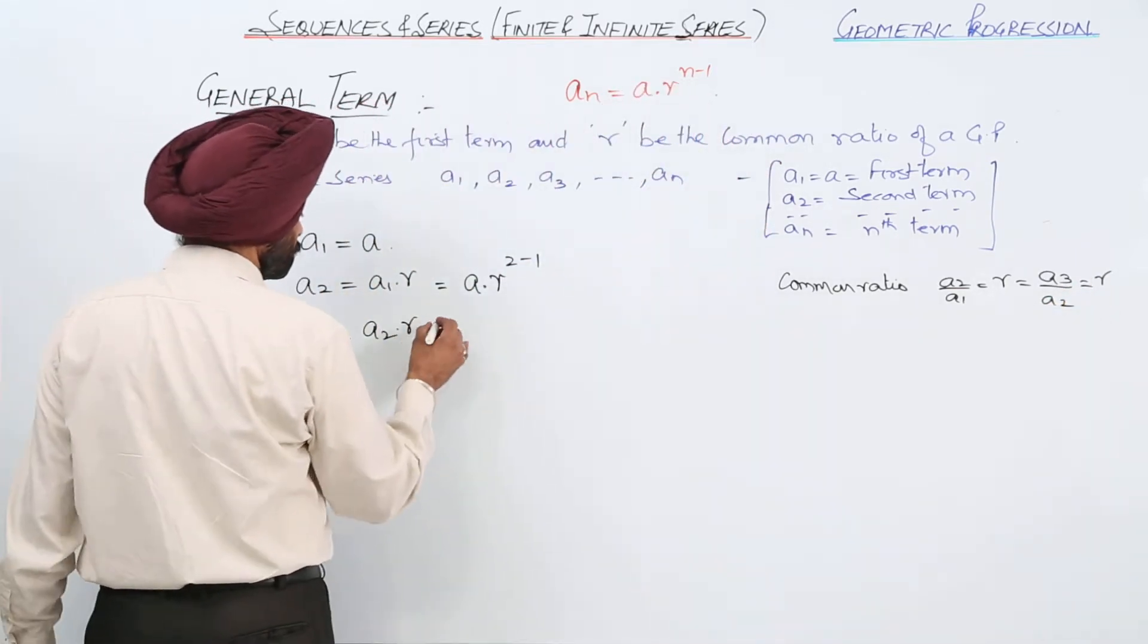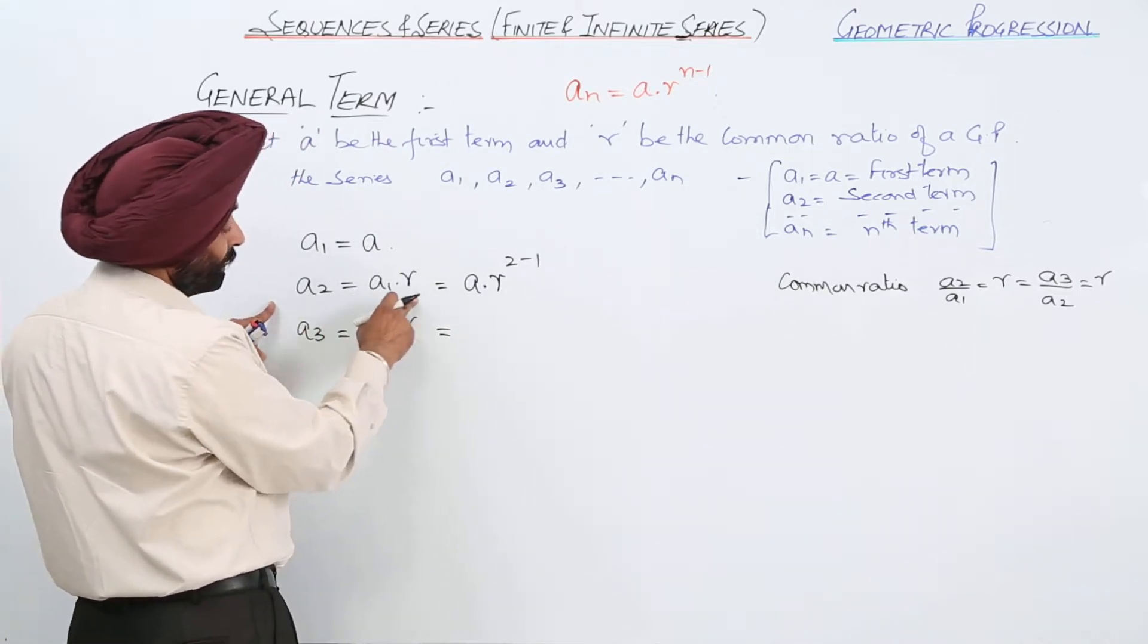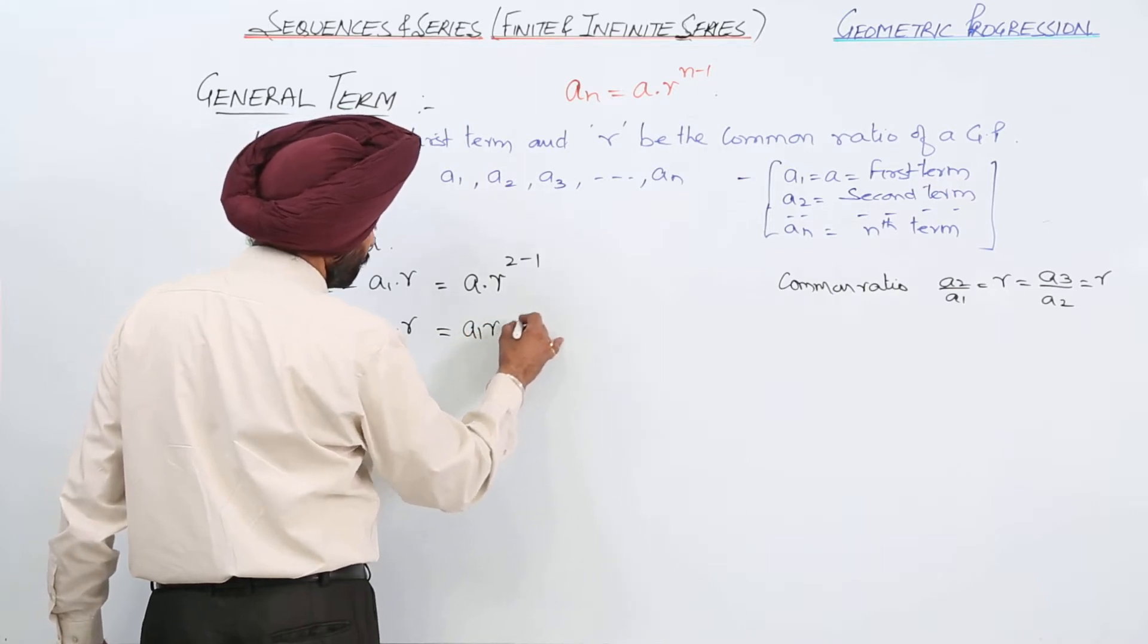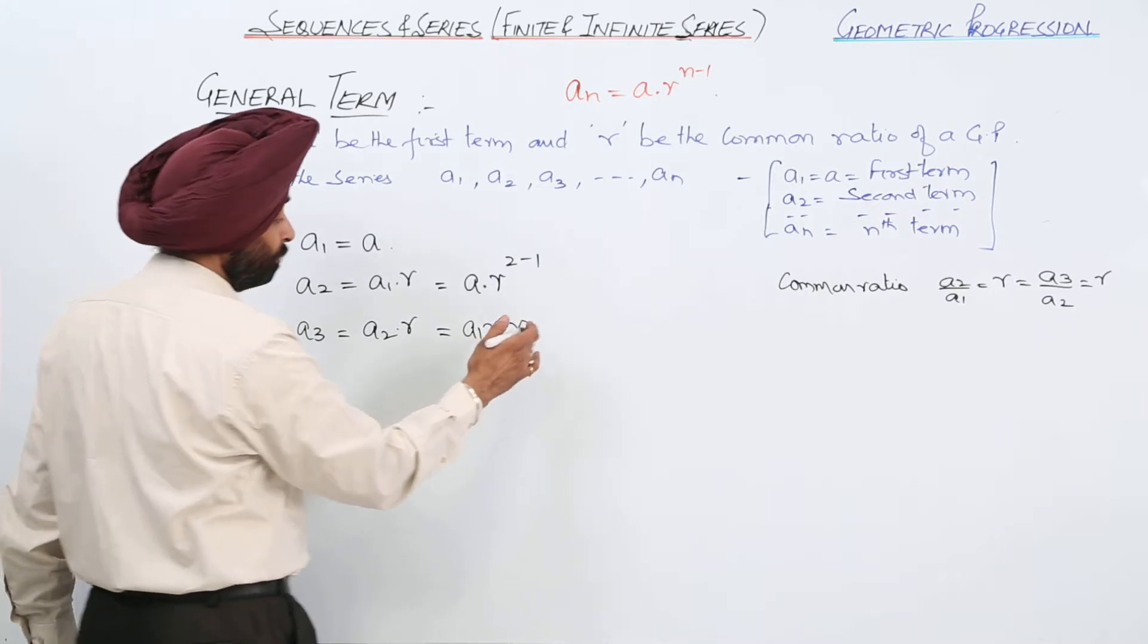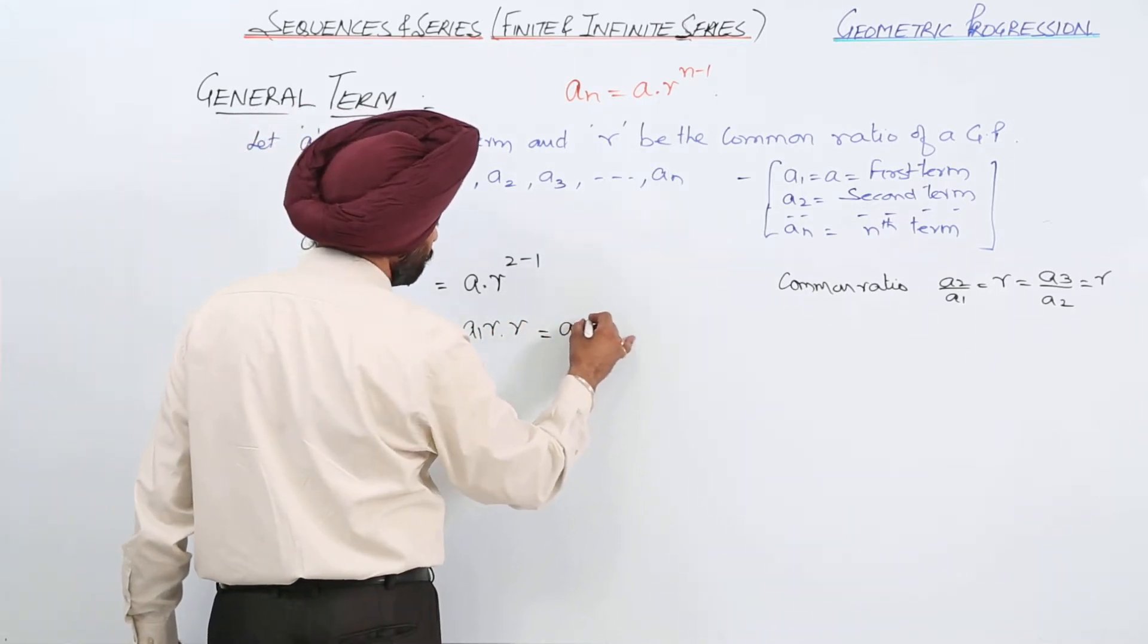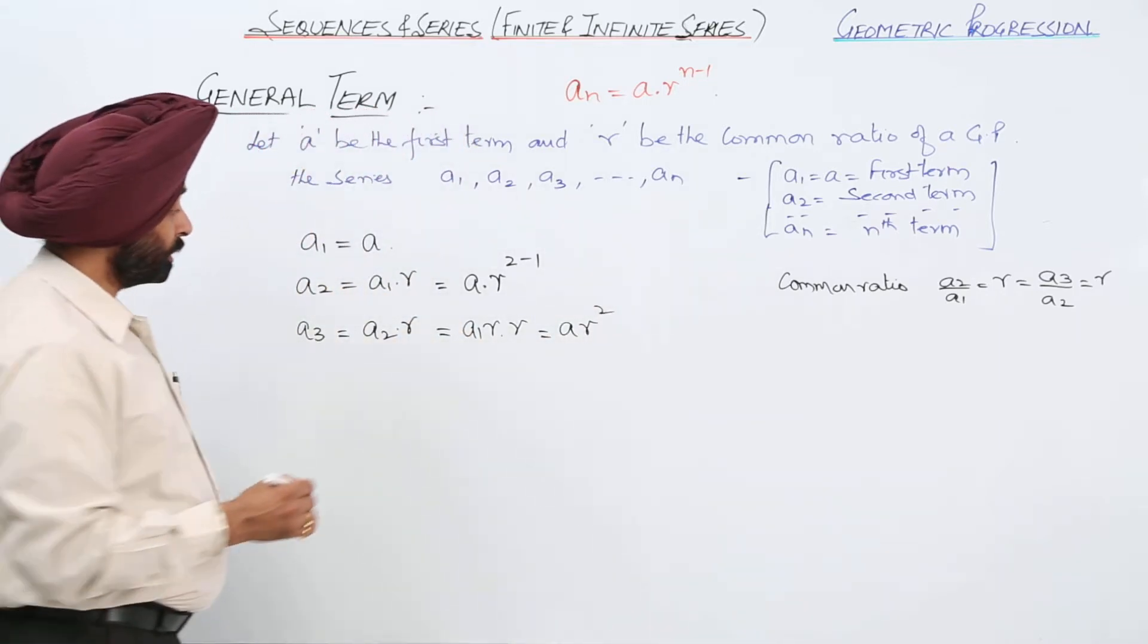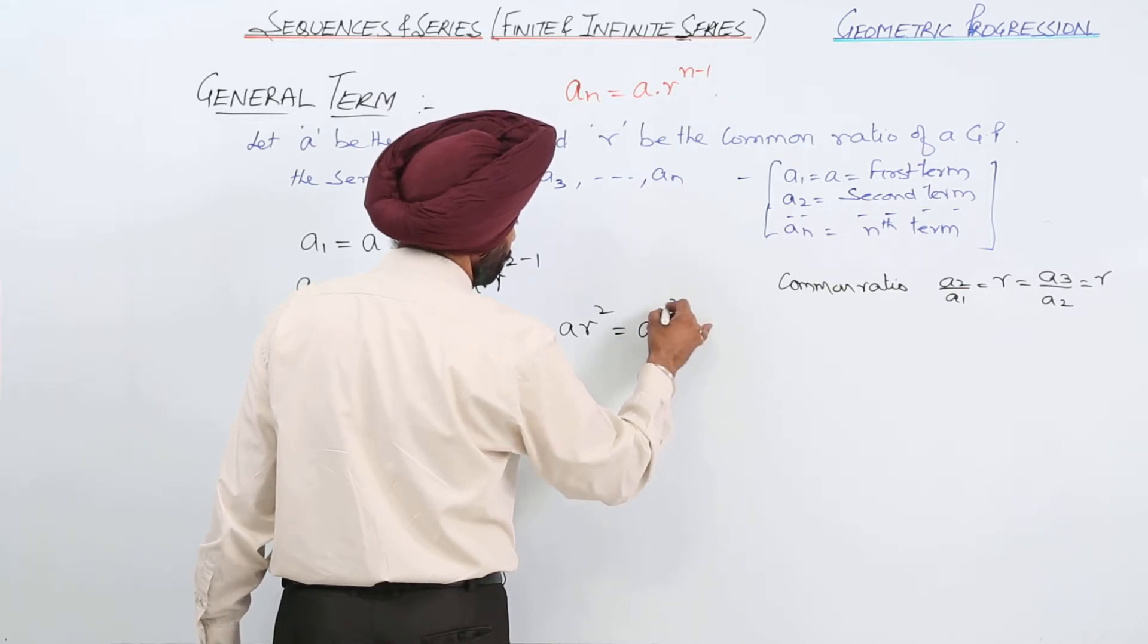A3 equals r times A2. Now A2, for this A2 we have A1 times r. So it is A1 times r with r. A2 is this one, r is this one. Further, can we write this as ar square, or we can write ar raised to 3 minus 1?